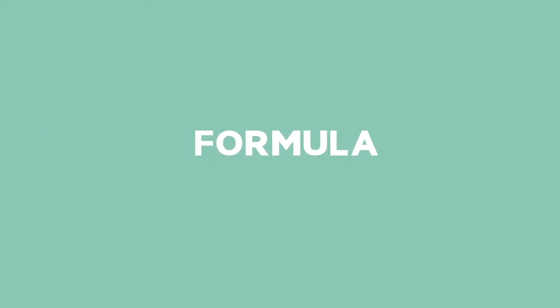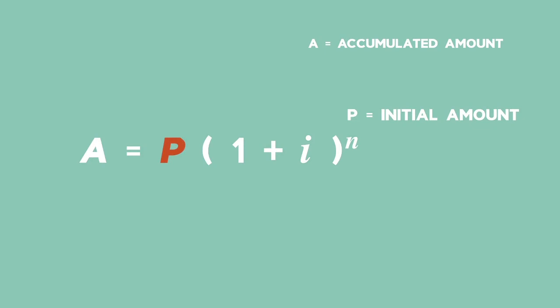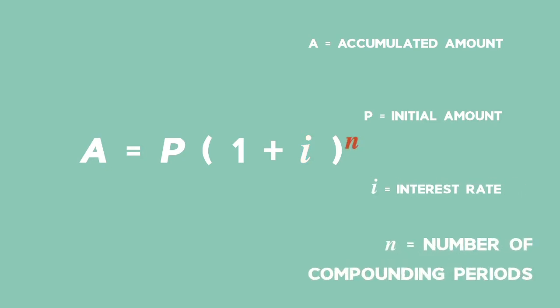The formula you will use to work out compound interest is A equals P times 1 plus i to the power of n. A is the accumulated amount, P is the initial amount, i is the interest rate written as a decimal, and n is the number of compounding periods.